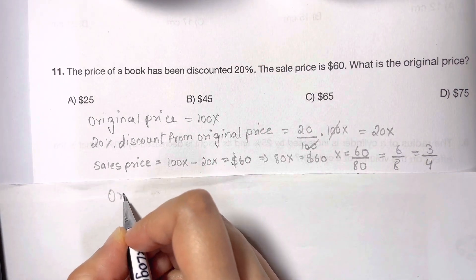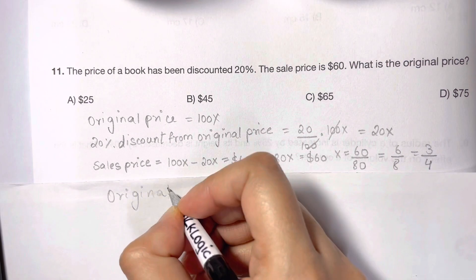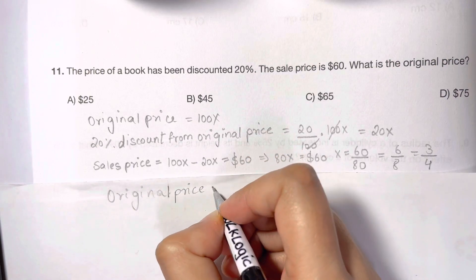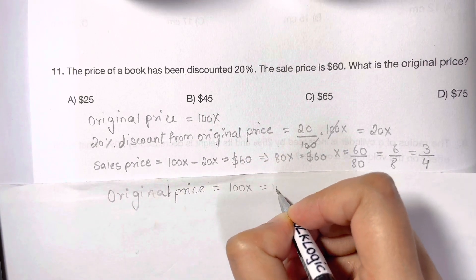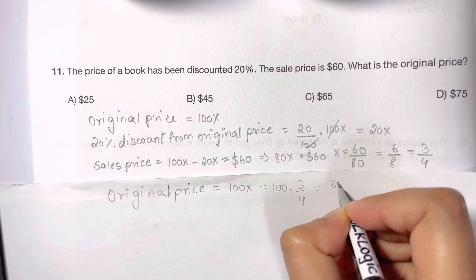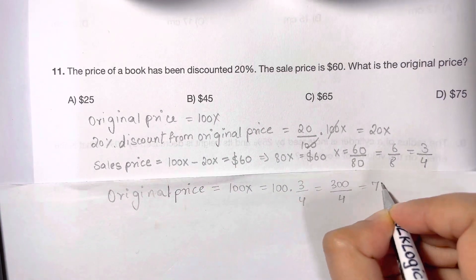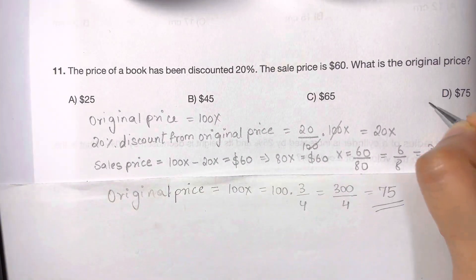Now the original price equals 100x, which equals 100 times 3/4, and that is $75. The answer is choice D. Thank you!